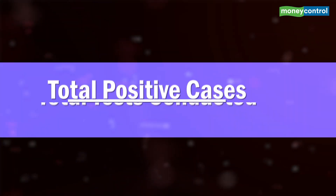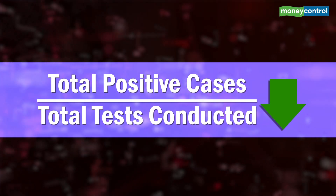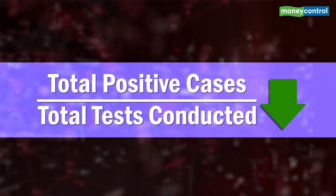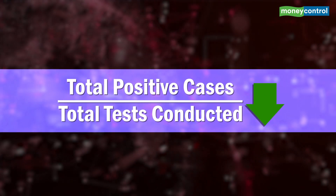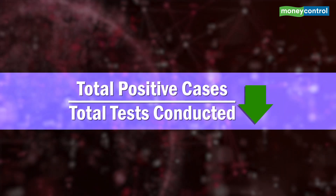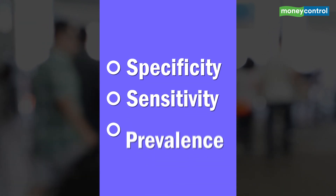The efforts of government battling the coronavirus can be called successful if they are able to smother the ratio. To understand this further, we need to analyse testing in terms of specificity, sensitivity and prevalence.